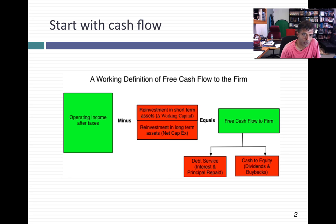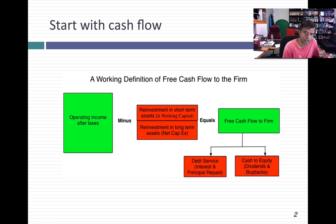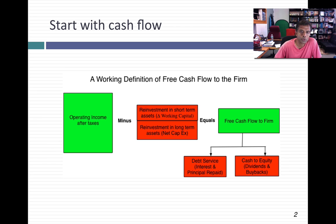Here's how free cash flow to the firm is computed. You start with the after-tax operating income of the company — not the net income, but the after-tax operating income. You subtract out what you reinvest for future growth, and you break that reinvestment down into reinvestment in long-term assets, usually measured as the difference between capex and depreciation, and reinvestment in short-term assets. What you're left with is the free cash flow to the firm. For a healthy, mature firm, this should be a positive number because you start with positive earnings, and even after reinvesting to cover future growth, there should be cash left over.